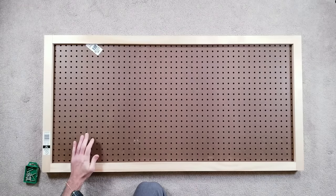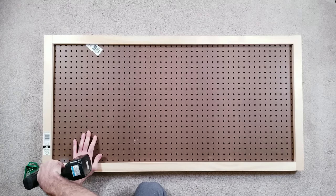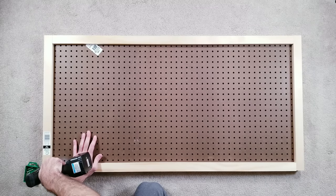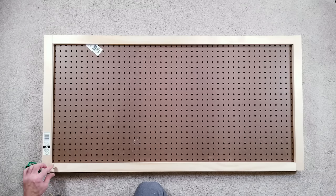After getting everything lined up I drilled small pilot holes and will be using 1 and 1/4 inch screws to secure everything together. The screws are going to be just long enough to go through the back pieces the pegboard and about halfway through the wood in the front.